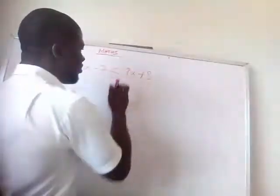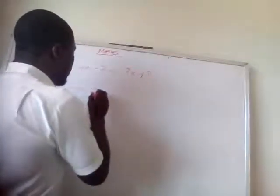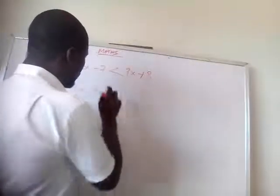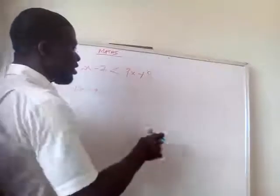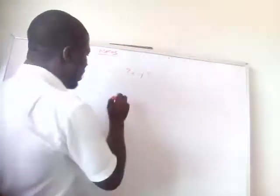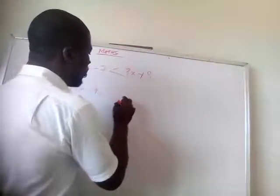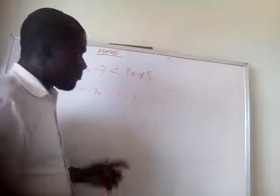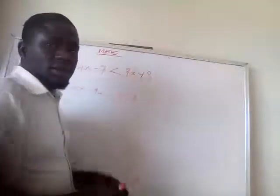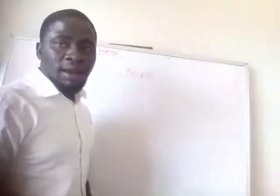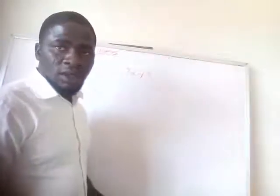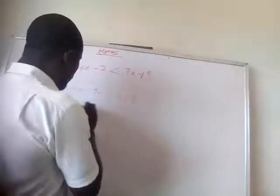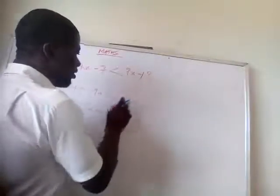Here 9x is positive, so it will change to negative: you have 4x minus 9x is less than. This 7, when we cross the sign, it will change to plus. So you have 8 plus 7. 4 minus 9 gives minus 5, so you have minus 5x is less than 15.